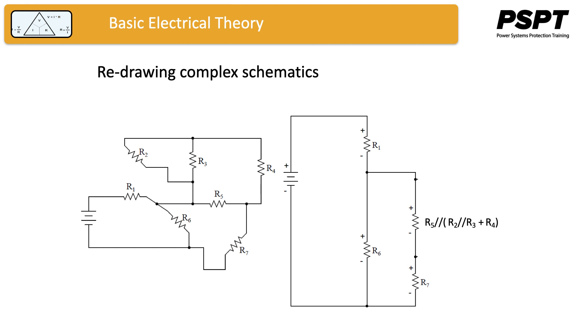And that can be replaced by an equivalent resistor with that resistance, and it is now in series with R7. That combination of series resistors can be replaced with one resistor, which is R7 plus R5 in parallel with the combination of R2 in parallel with R3 plus R4.